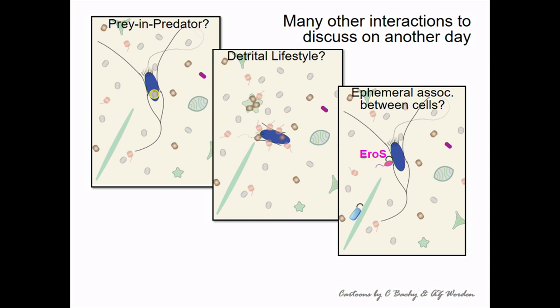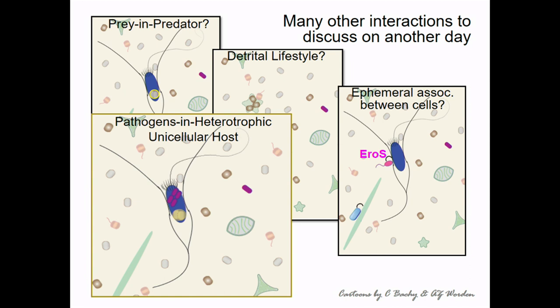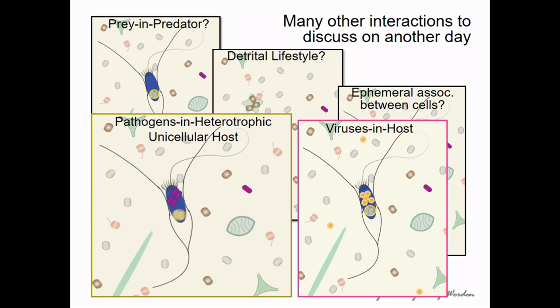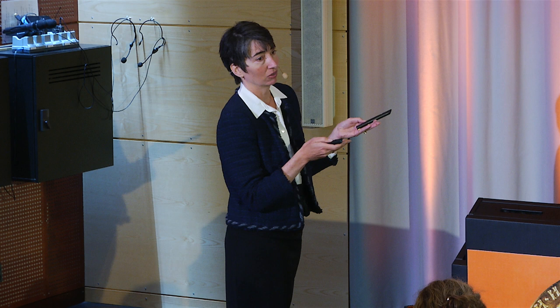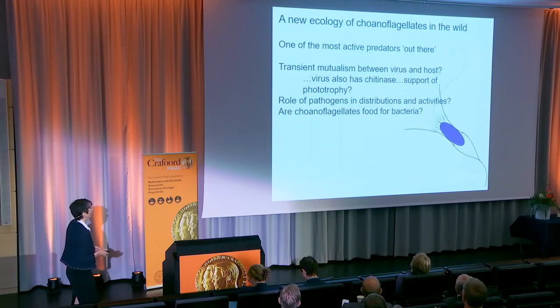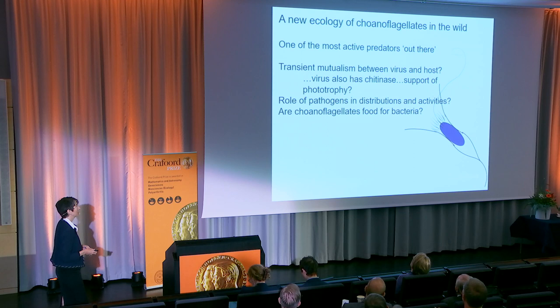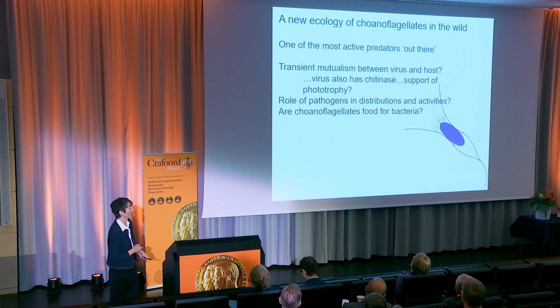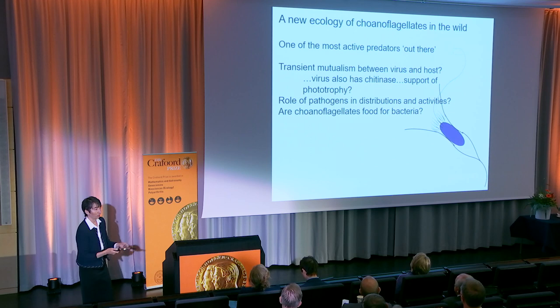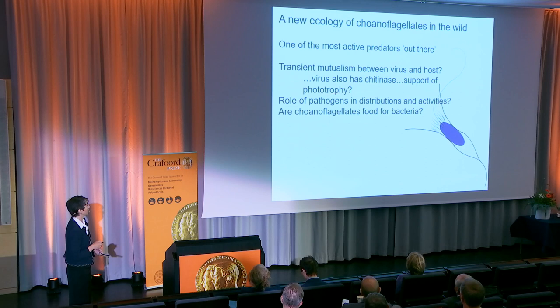We've moved from interactions we might typically think about and found what we think is a pathogen in a heterotrophic unicellular host, and a virus in its host. It's a new ecology for choanoflagellates in the wild — they're one of the most active predators out there. We see what might be called a transient mutualism between virus and host. The virus also has chitinase, which allows it to process material and make it more available for possible phototrophy. We have to ask about the role of pathogens in distributions and activities, and whether choanoflagellates are food for bacteria.